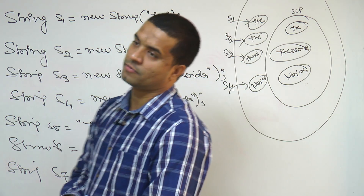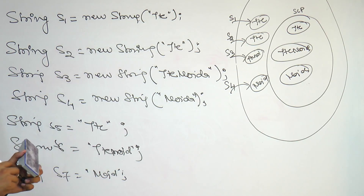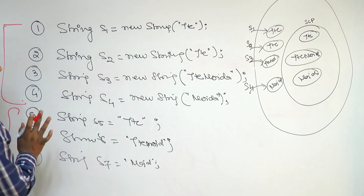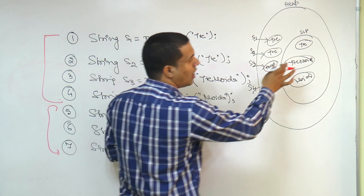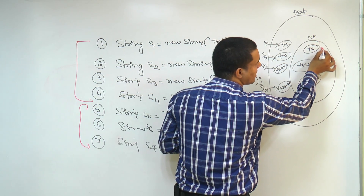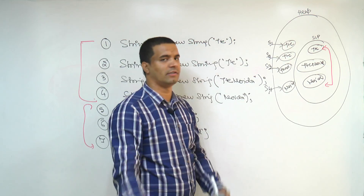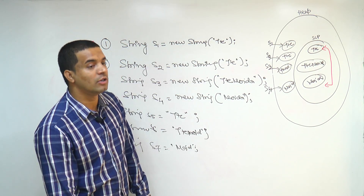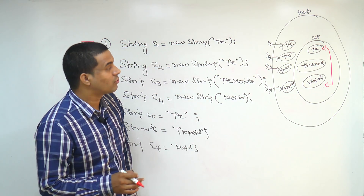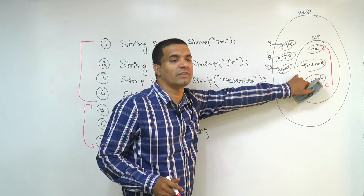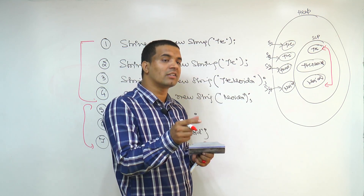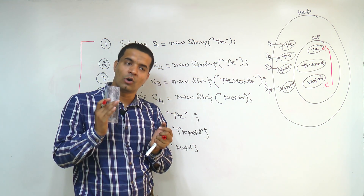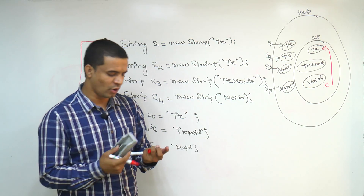One important question: the string literals available inside the SCP are unreferenced in this sketch — will they be eligible for garbage collection? The answer is that GC cannot access unreferenced objects inside the SCP, because the SCP does not come under the area of the garbage collector. GC is not allowed to enter inside the String Constant Pool at all.